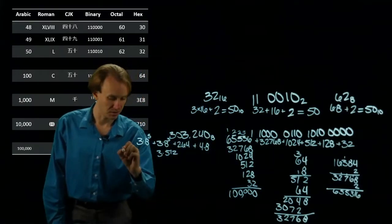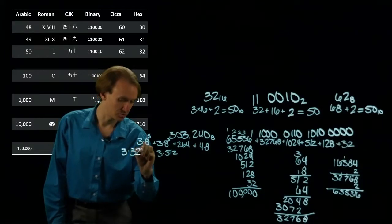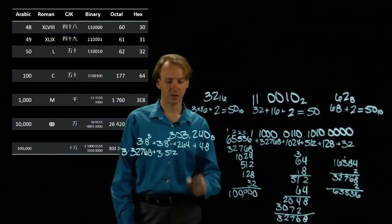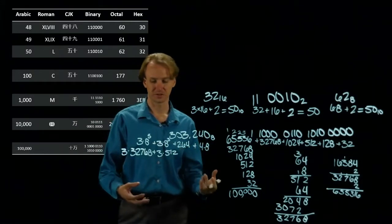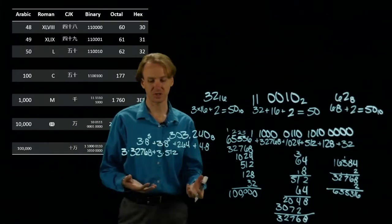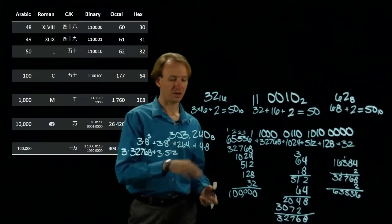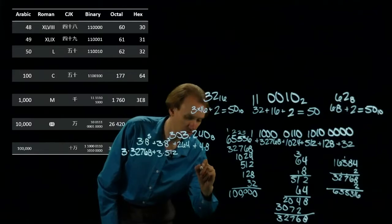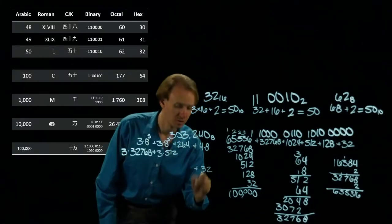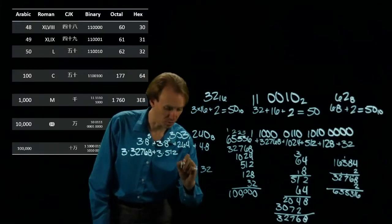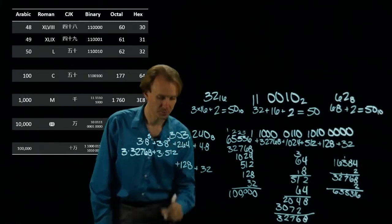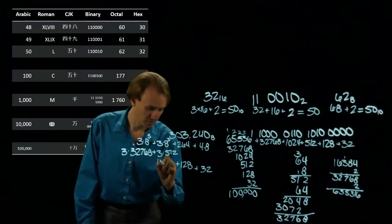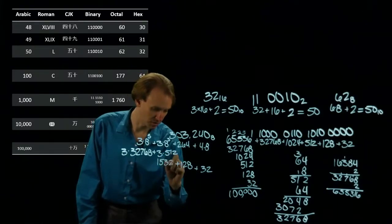I have 3 times 32768. So now I have all of my terms in simple numbers. I need to do some multiplication and some addition. 4 times 8 is 32. 2 times 64 is 128. 3 times 5 is 12 would be 15, 36.